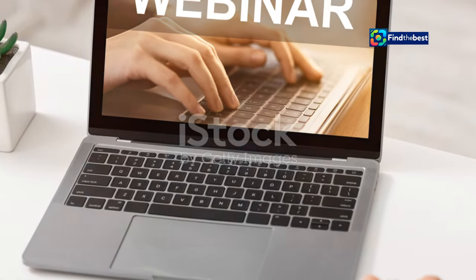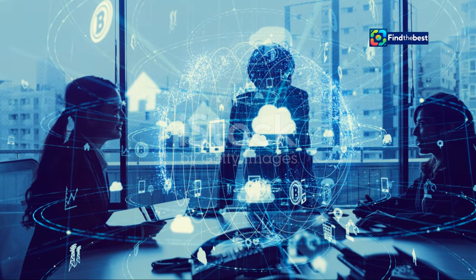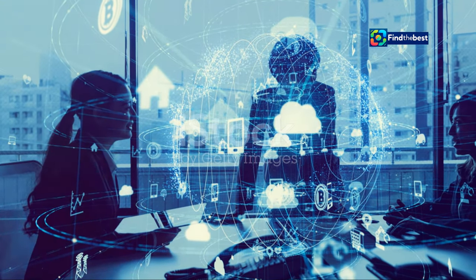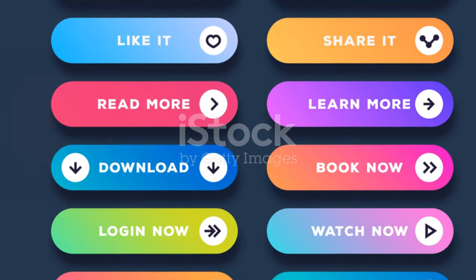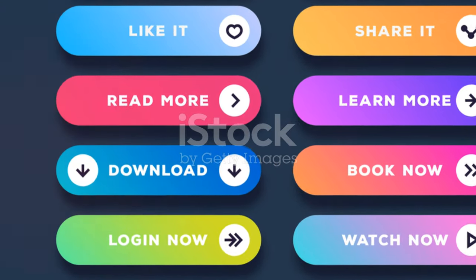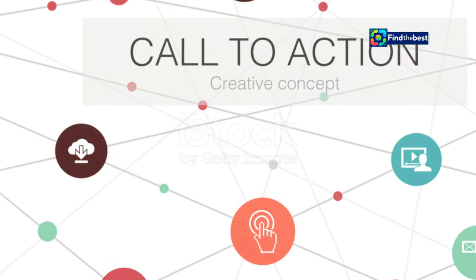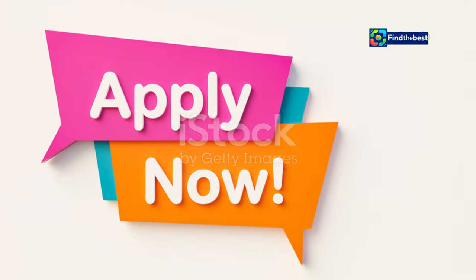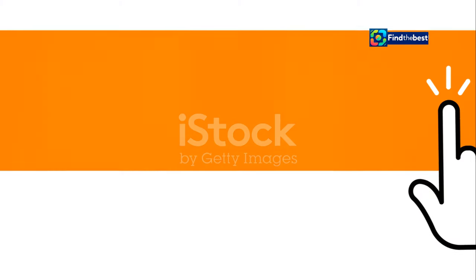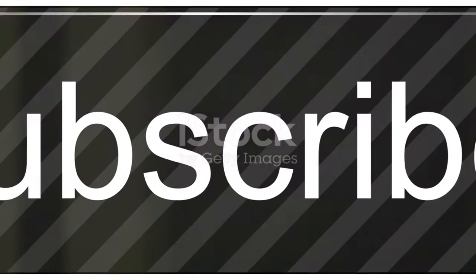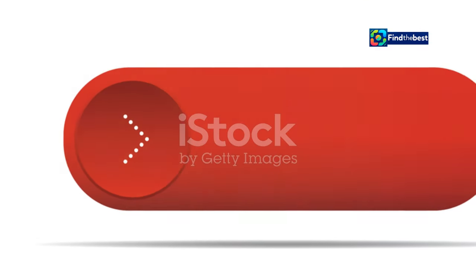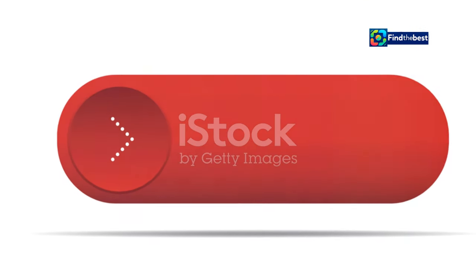Explain the benefit clearly. Why should the reader take this action? What's in it for them? Will they learn something new? Will they contribute to a discussion? Make the benefit clear and appealing. Place your CTA at a logical point - timing is everything. This is often at the end of a section. It's a natural place for the reader to take action. Make sure your CTA stands out. Use a different font or color to draw attention and make it pop.